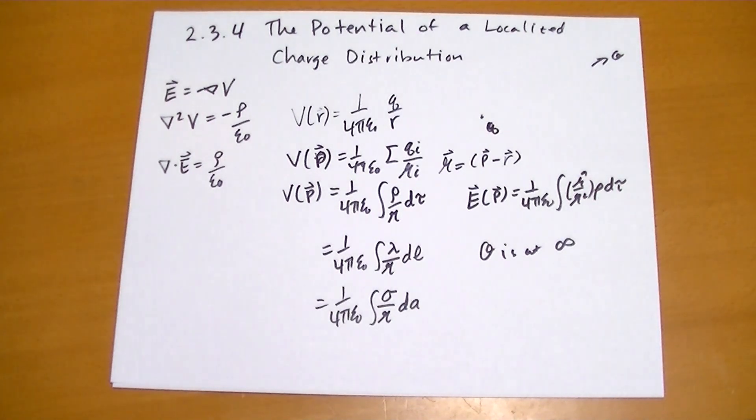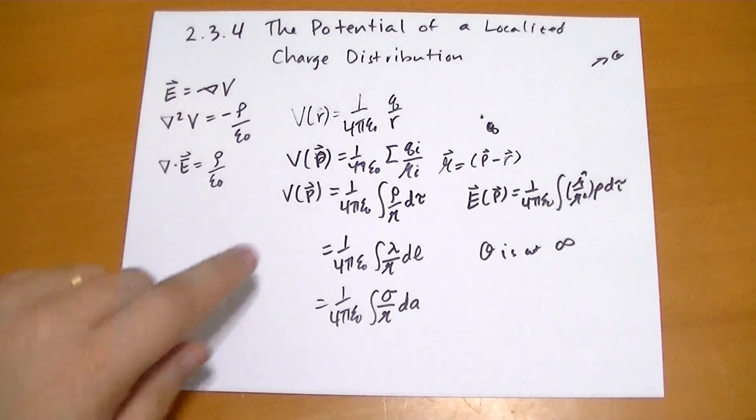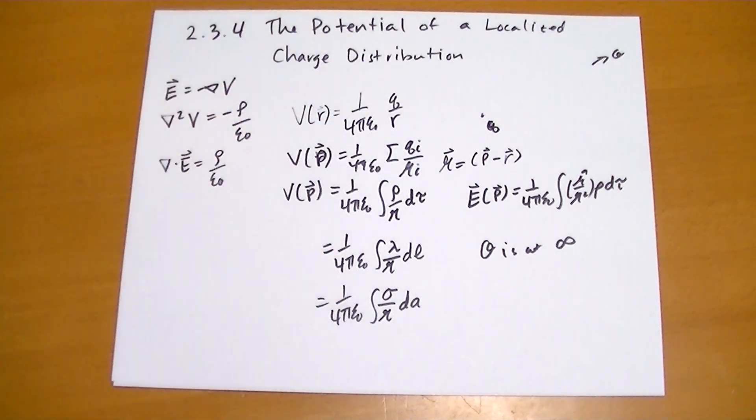So charge is the divergence of the electric field. That's what charge is. And the electric field is the gradient of the potential. And the potential is the integral of the charge. We have this circle we just built for ourselves.